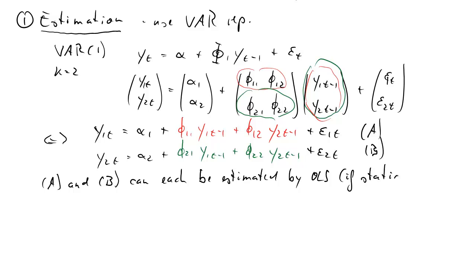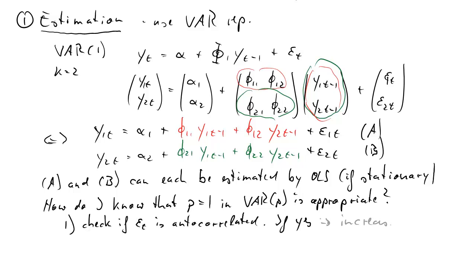Let's call them a and b. It turns out that a and b can be estimated by OLS if the process is stationary, and you will know about stationarity conditions. One question that arises is how do I know that a VAR(1), so the lag order of 1, is appropriate. Now basically two ways to go about that. You could check for the autocorrelation in the residuals. What you want is that the residual vector is uncorrelated. If there is autocorrelation, then we increase the lag order.